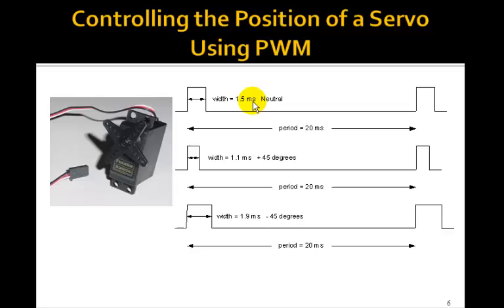For example, if this is a 1.5 millisecond pulse compared to the 20 millisecond period, so this is a relatively small duty cycle, you see, then this is the neutral position, and it just stays fixed there. And then if you reduce the width to, say, 1.1 milliseconds, then this motor will turn, say, plus 45 degrees, and if you lengthen it to about 1.9 milliseconds, it will rotate in the opposite direction, minus 45 degrees. So that's how you would control the position of this servo using a PWM signal.